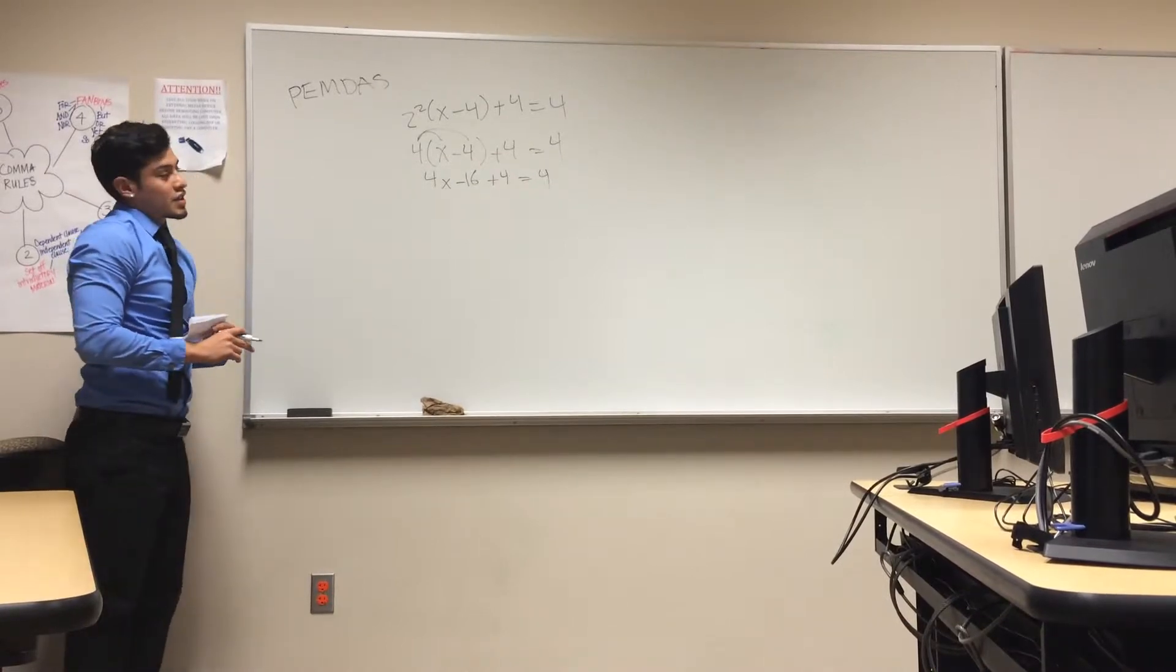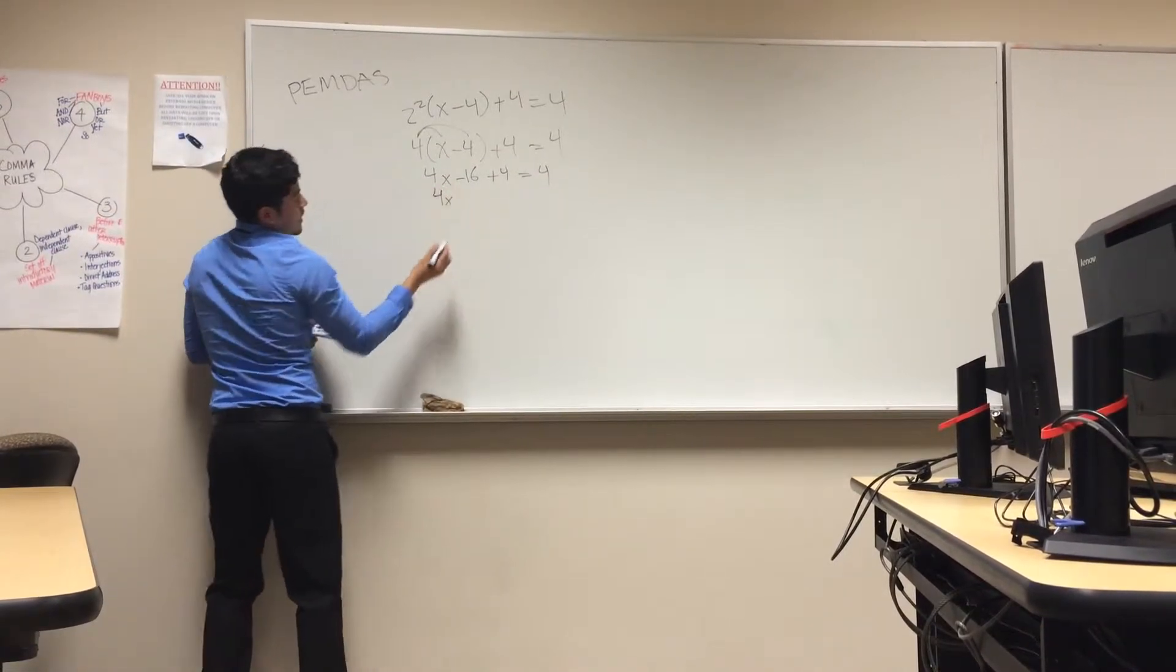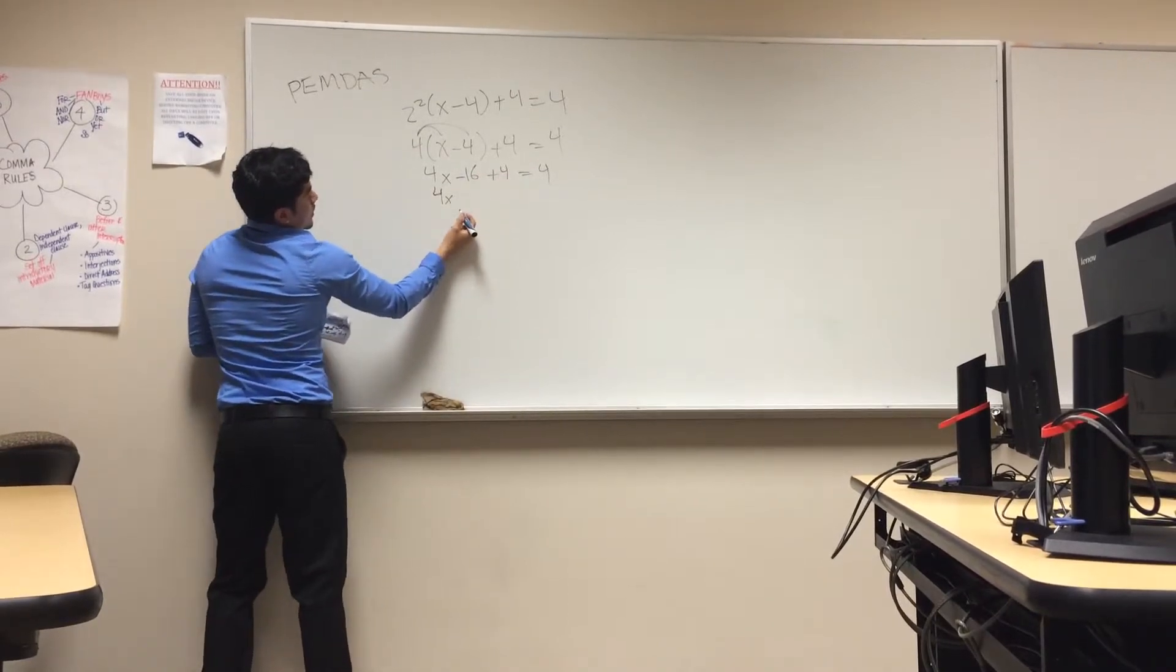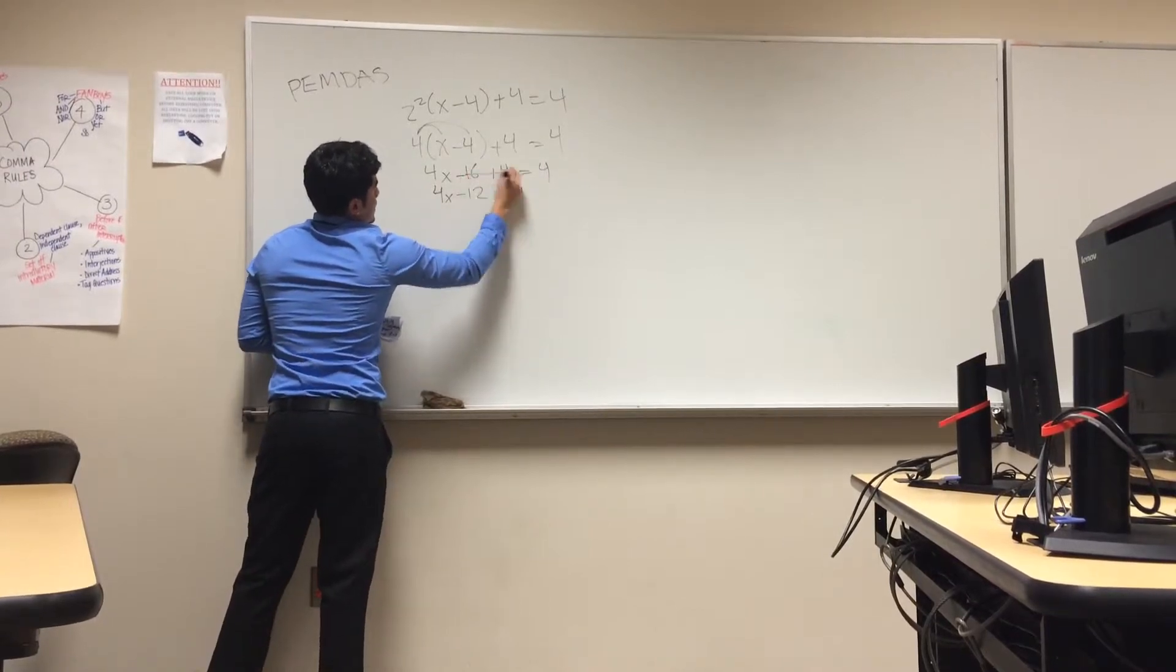After this, you combine like terms, which is just these two. So, you bring down the 4x. You don't do anything to the x. Negative 16 plus 4 is negative 12 equals 4.